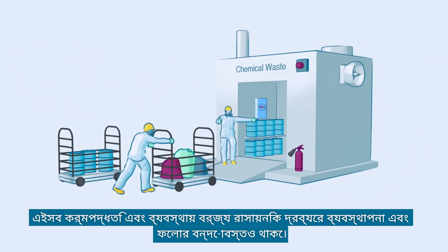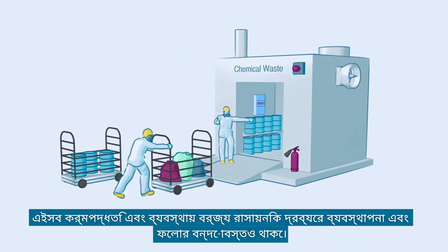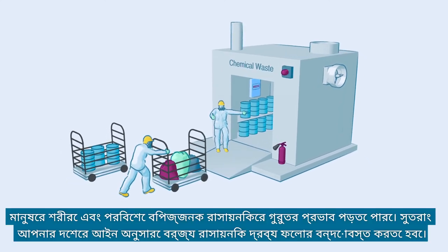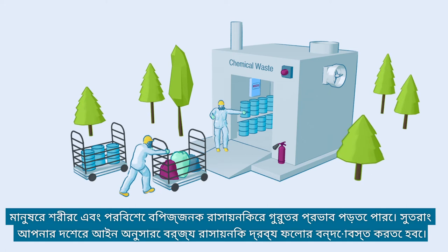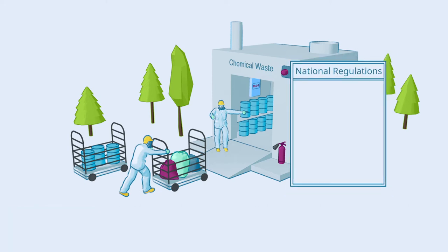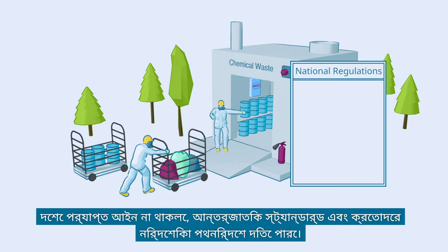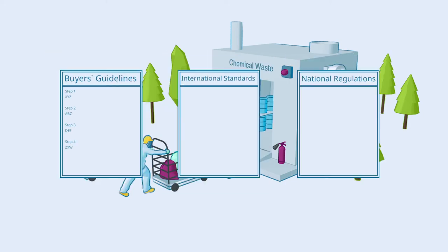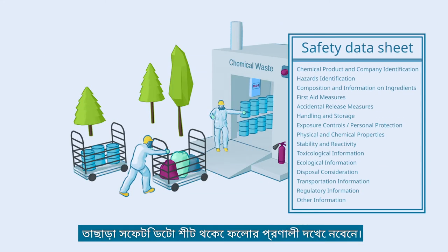Such practices and provisions also include those for the management and disposal of chemical waste. Hazardous chemicals can have a significant impact on human health and the environment. Therefore, chemical waste needs to be disposed of according to your national regulations. In the absence of adequate national regulations, international standards and buyer's guidelines can provide guidance. Also, check the disposal procedures from the safety data sheets.